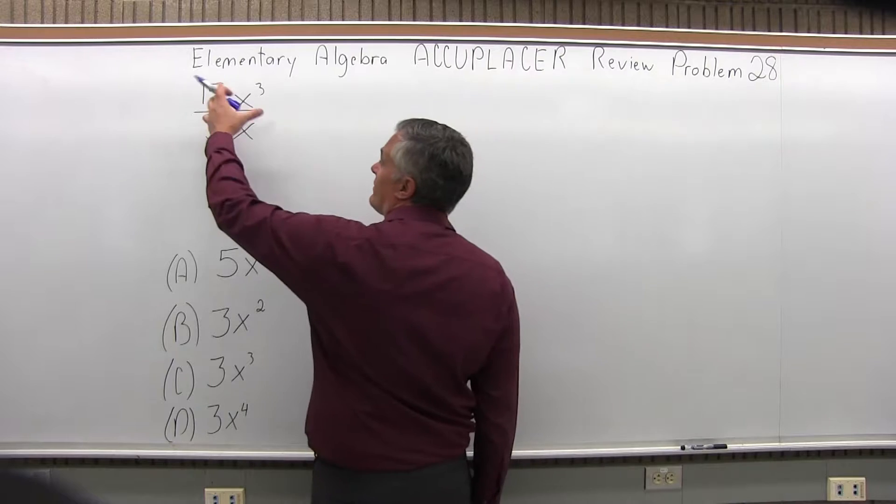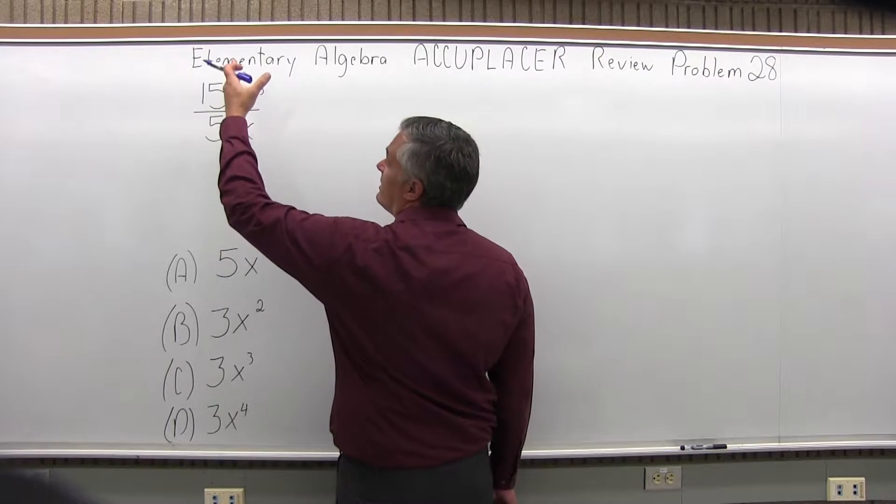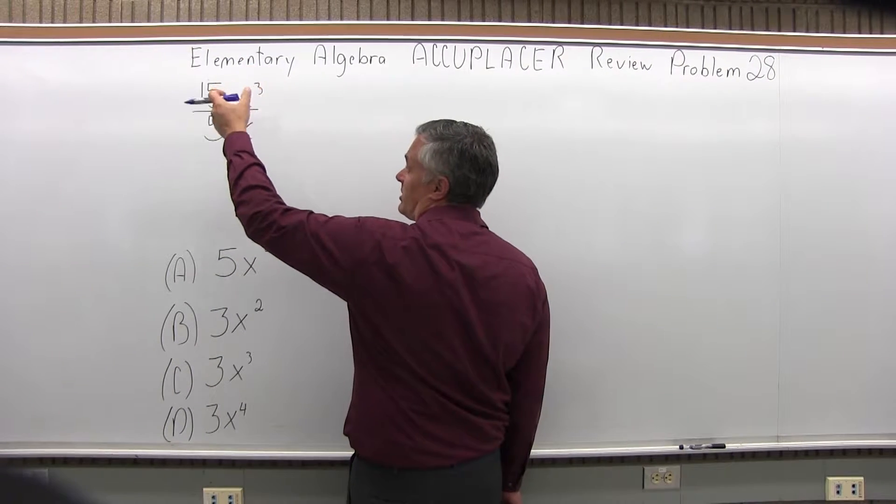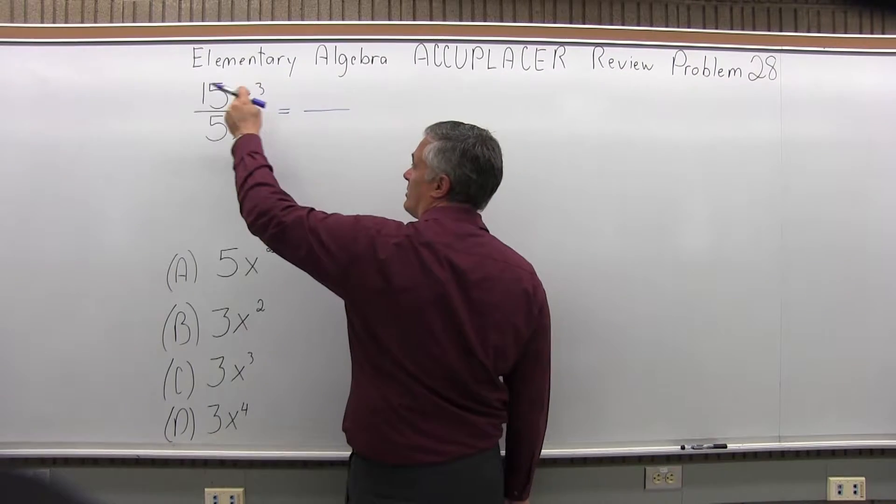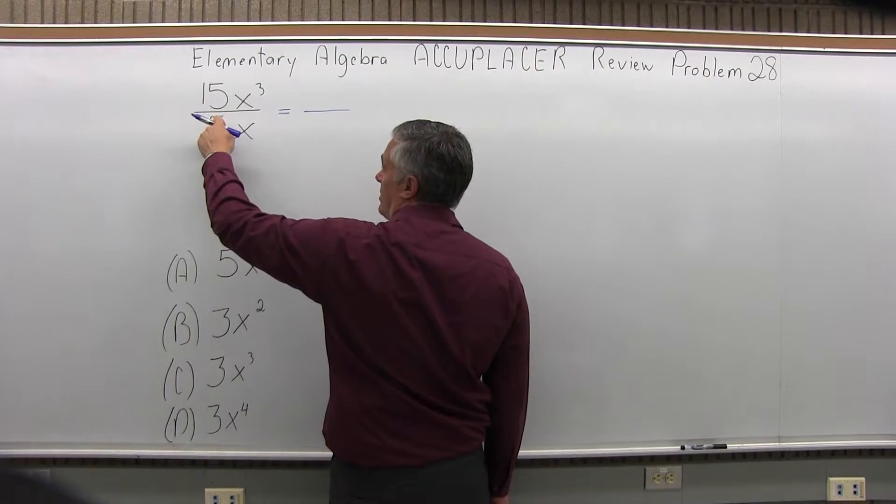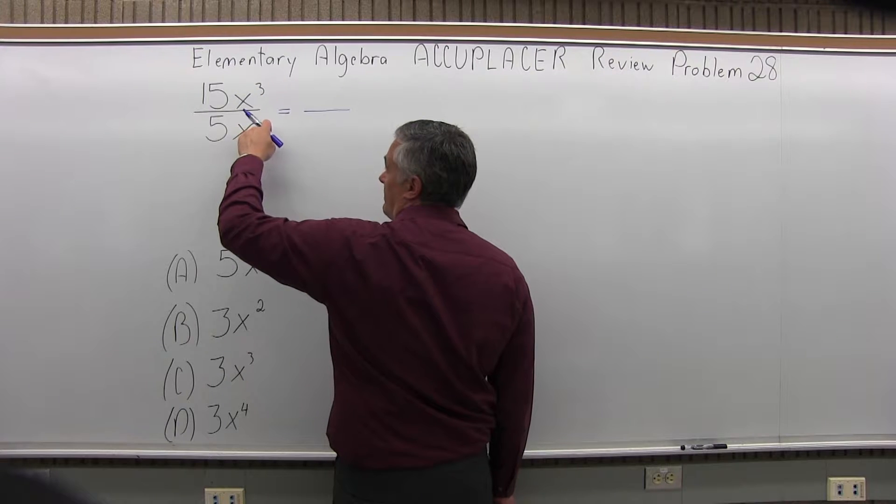When you have a number and a variable you want to simplify the number, get an answer, simplify the variable, get an answer. You can think of it almost as two separate problems: one problem with the number and one problem with the variable.